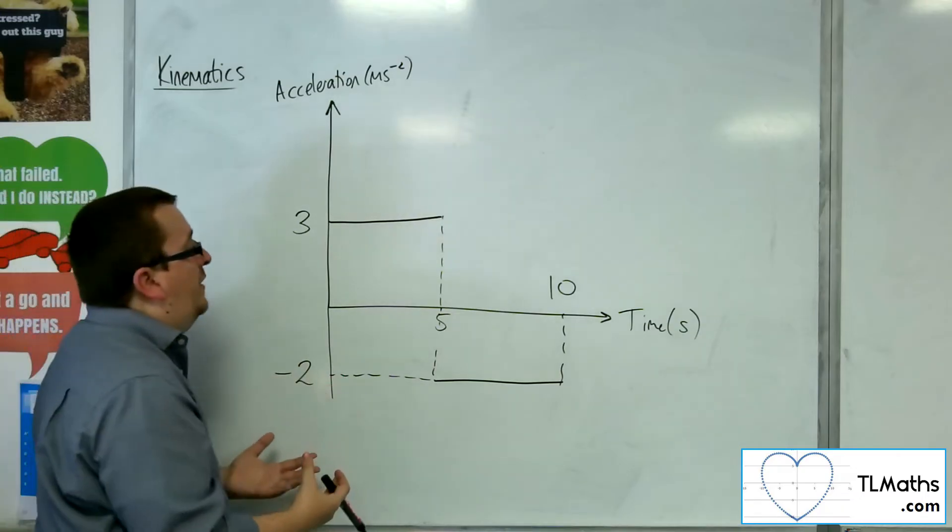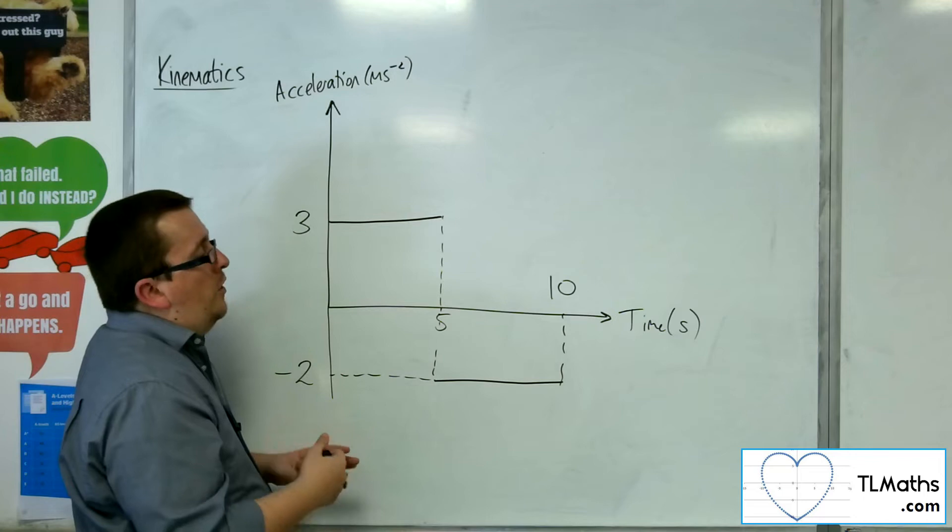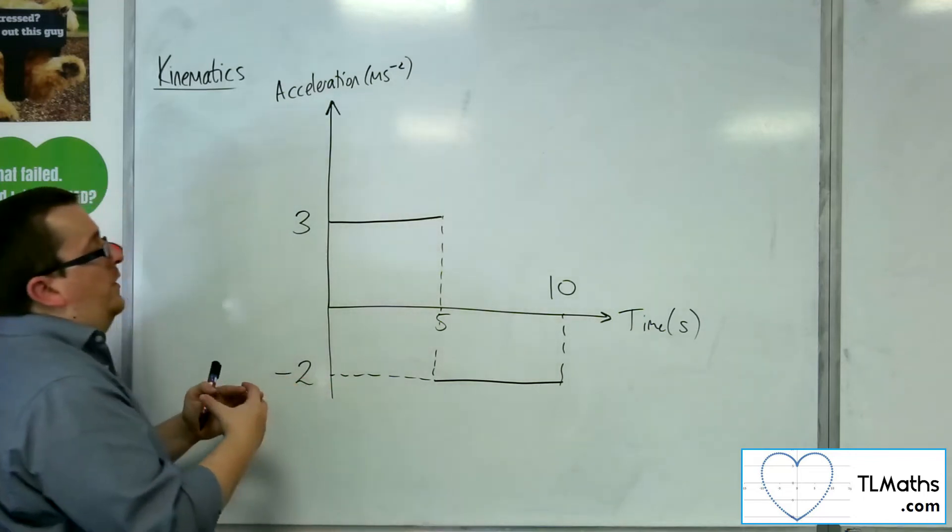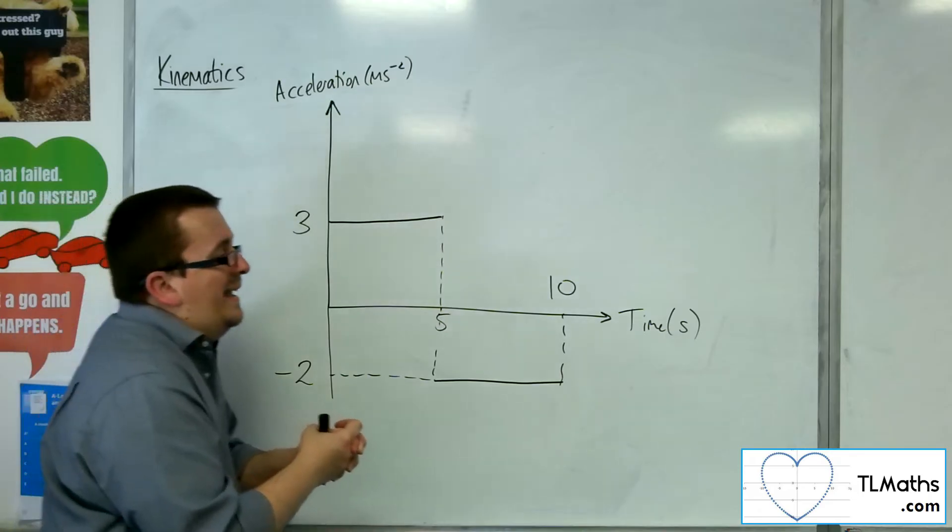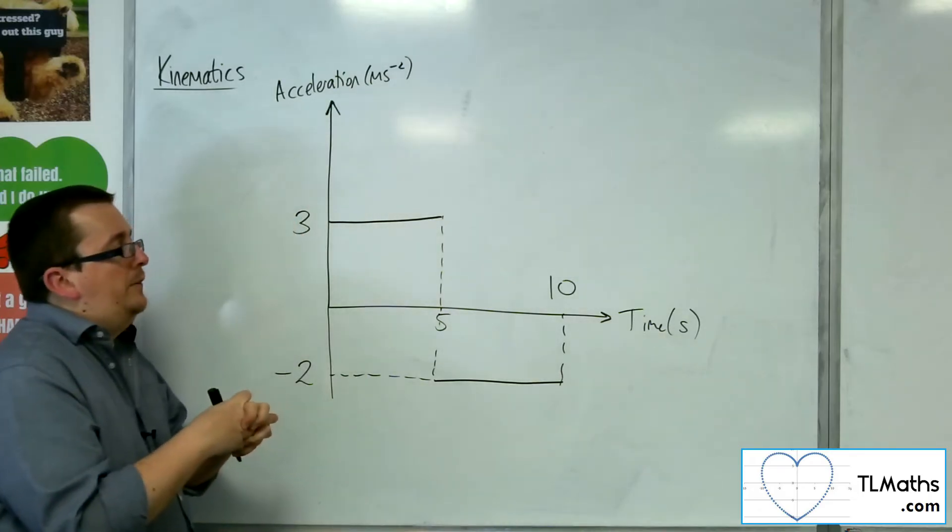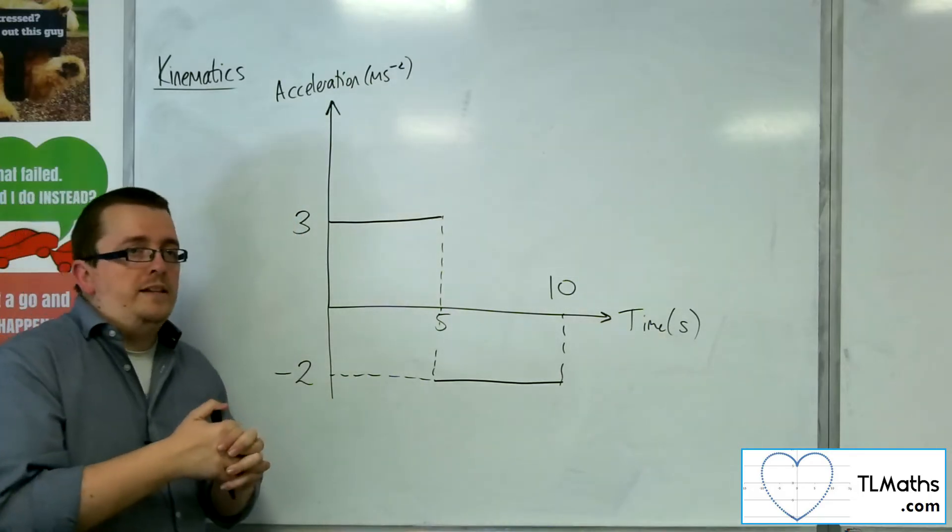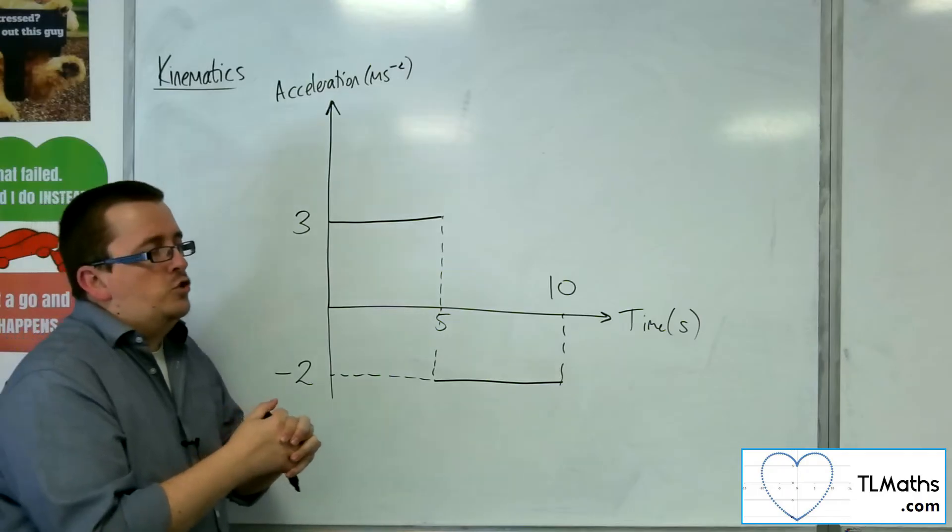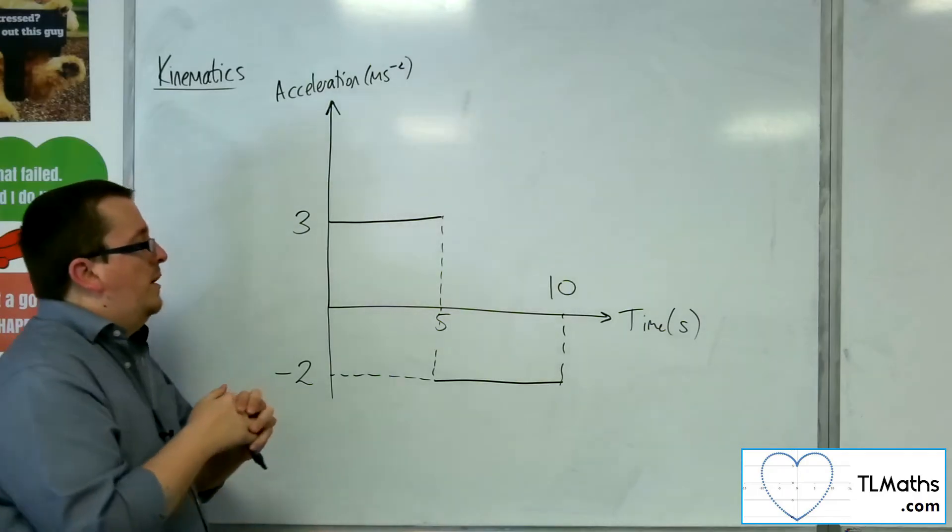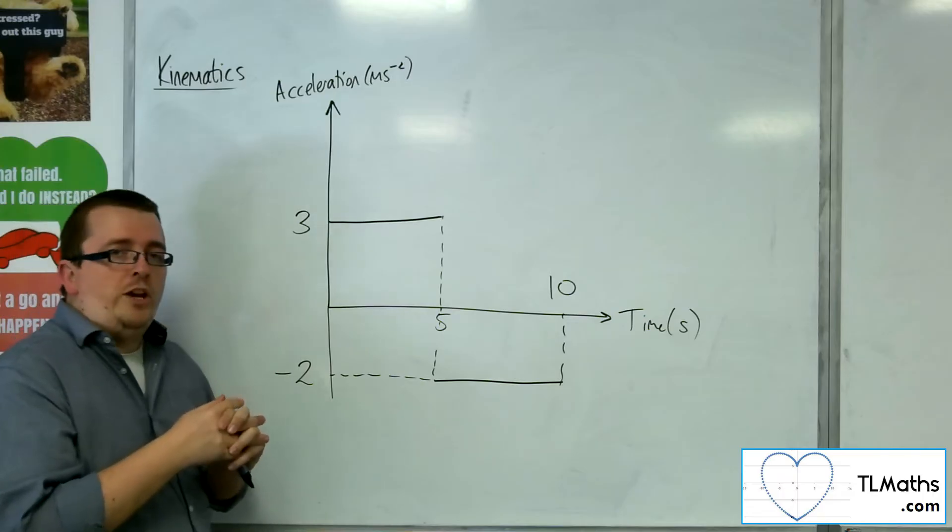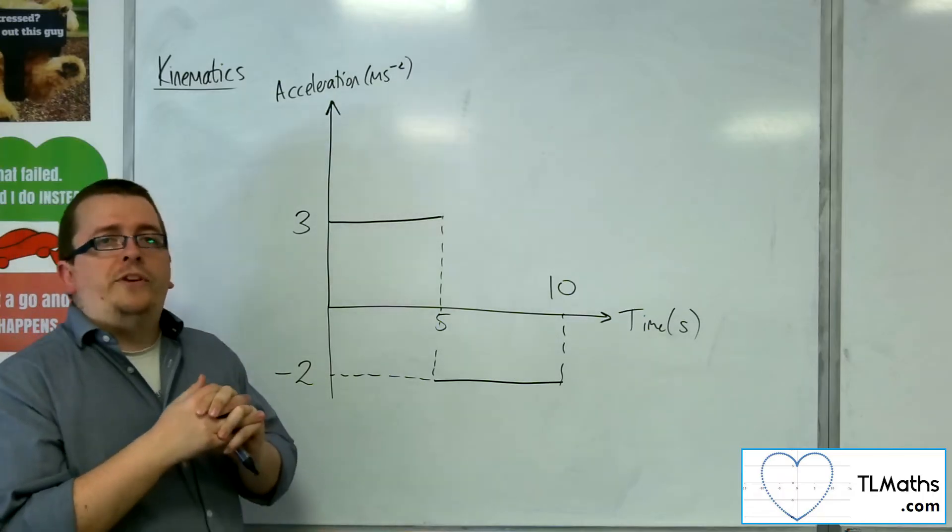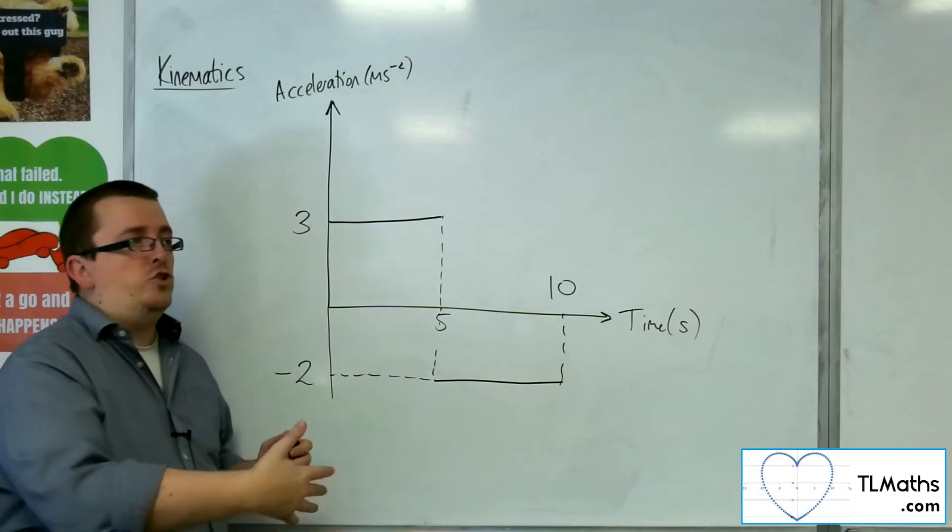Whereas here, for acceleration, we've got this gradient of the acceleration is actually known as the jerk. Which is a strange word to call it, but it's really the understanding that if a particle is changing acceleration quite suddenly, then you'll get quite jerky motion.